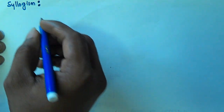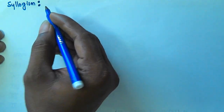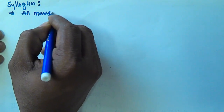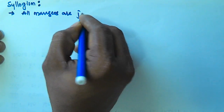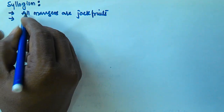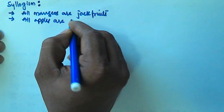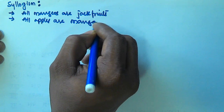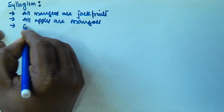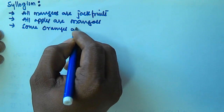Hello friends. In this video we will see another problem based on the syllogism with three statements. The first statement given is: all mangoes are jackfruits. The second statement given is: all apples are mangoes. The third statement given is: some oranges are apples.